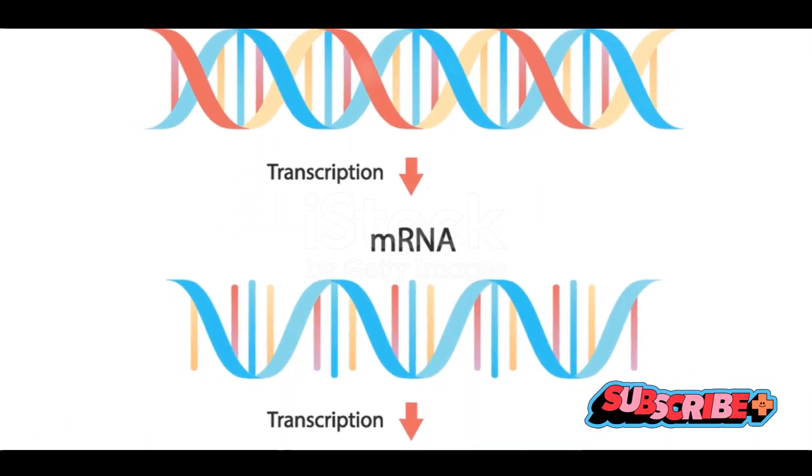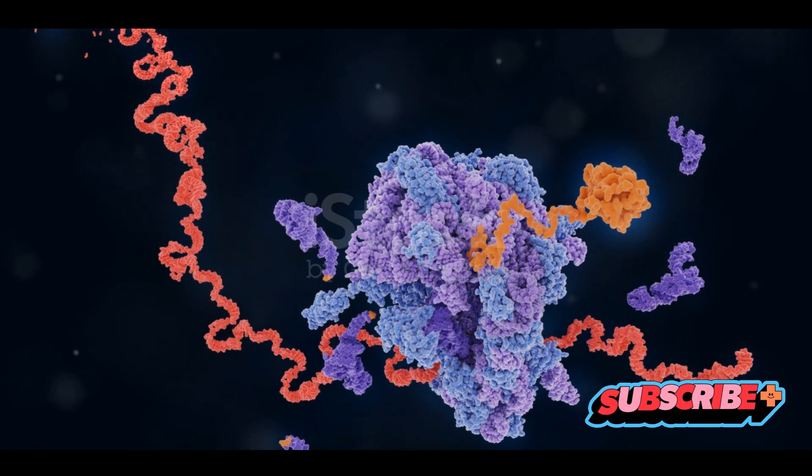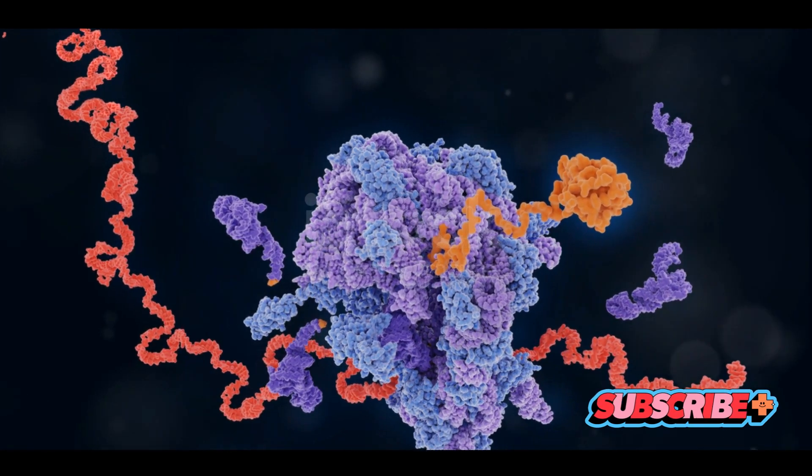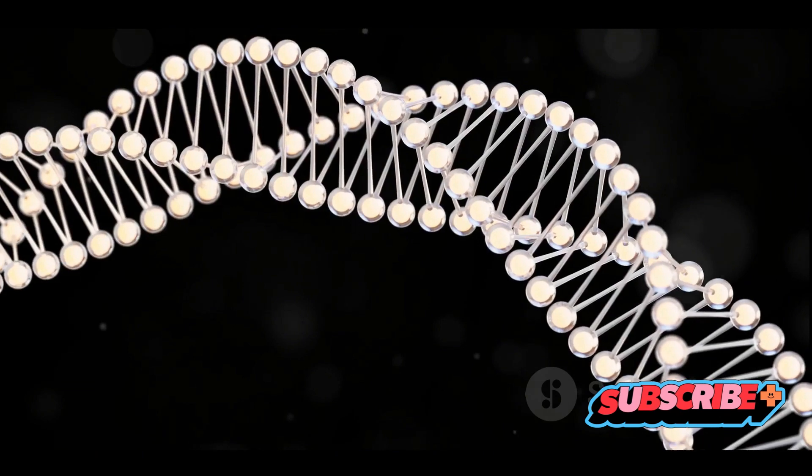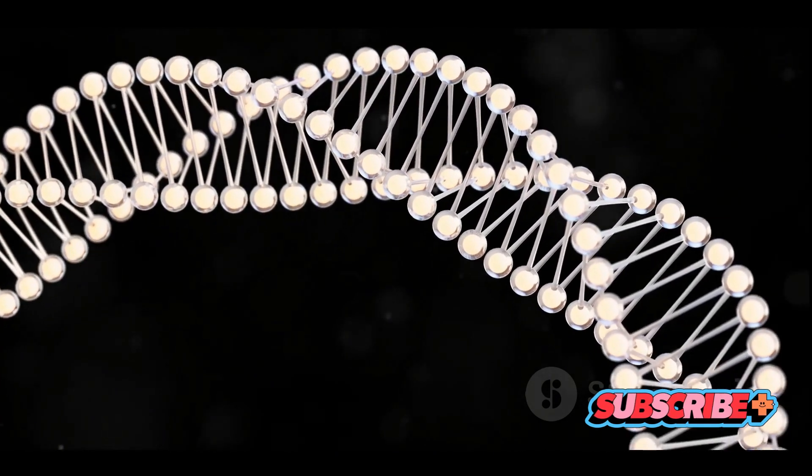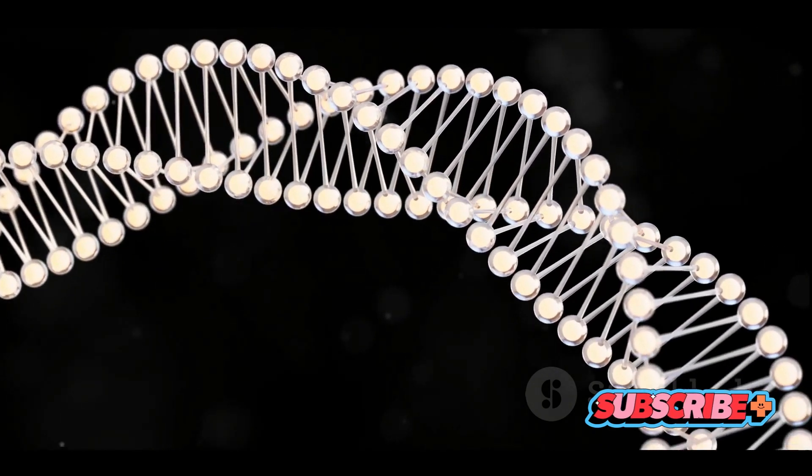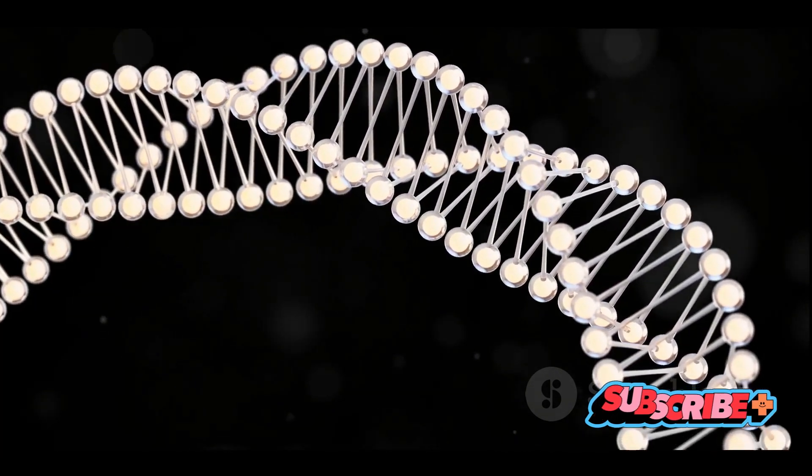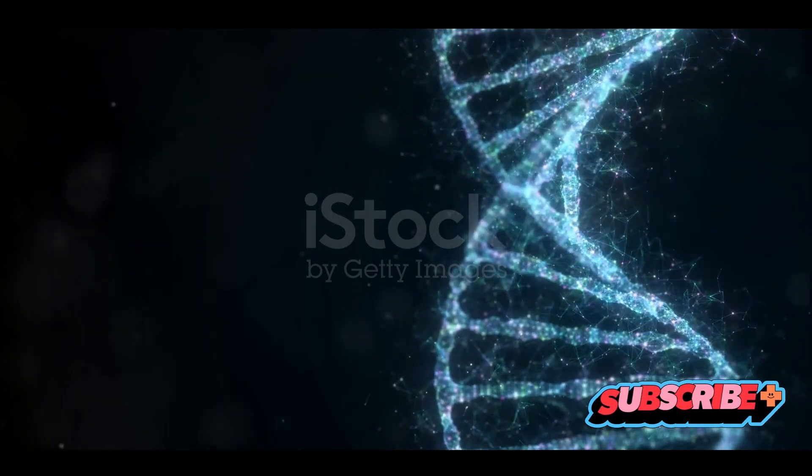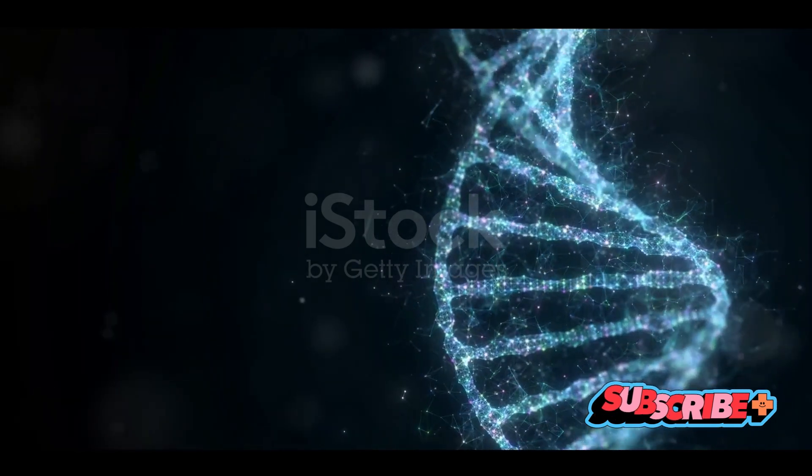During transcription, a portion of the DNA strand serves as a template for the creation of RNA. This isn't just any RNA, though. It's a specific type known as messenger RNA, or mRNA for short. The mRNA is assembled one piece at a time, following the DNA template like a blueprint, until a complete copy is made.